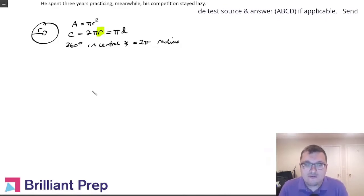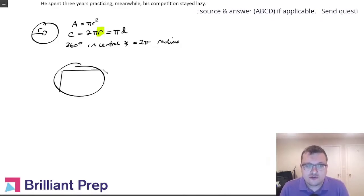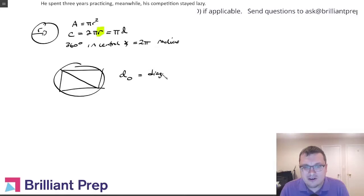Sometimes you'll have a circle with a square inscribed in it. In that circumstance, the diameter of the circle is the same thing as the diagonal of the square. That's how you would find your radius.